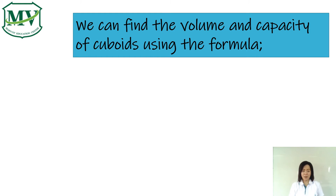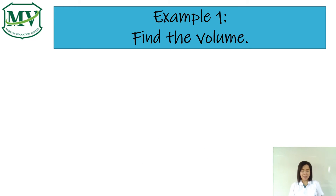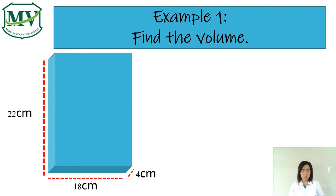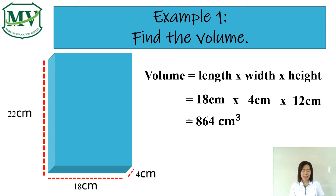Remember, to find the volume and capacity of cuboids, we use the formula: volume or capacity is equal to length times width times height. Let's discuss the following examples. Example number 1: let's find the volume of this cuboid. The formula we're going to use is volume equals length times width times height. So, 18 centimeters times 4 centimeters times 12 centimeters equals 864 cubic centimeters. Therefore, the volume of this cuboid is 864 cubic centimeters.